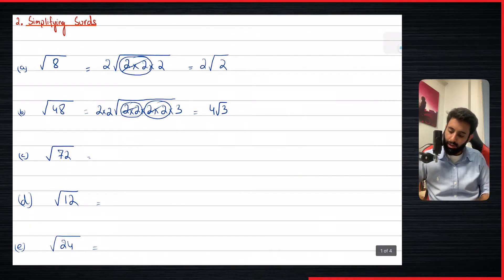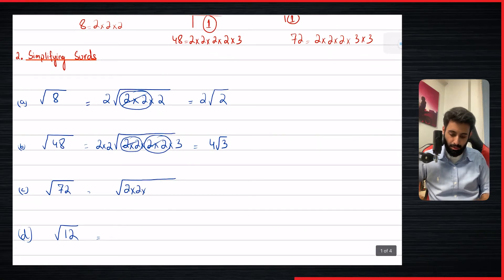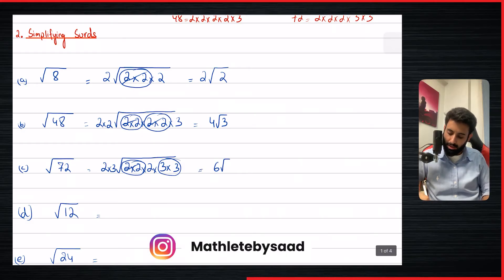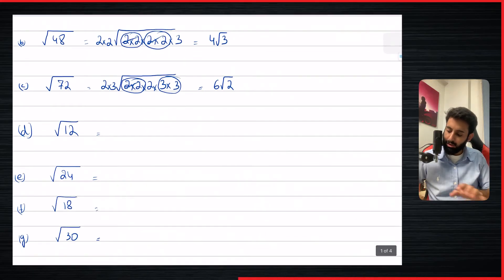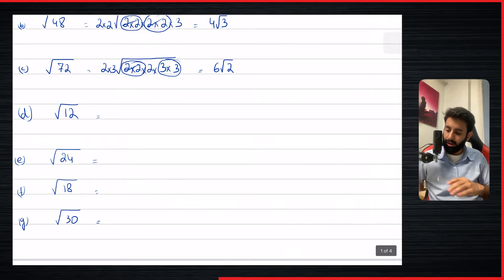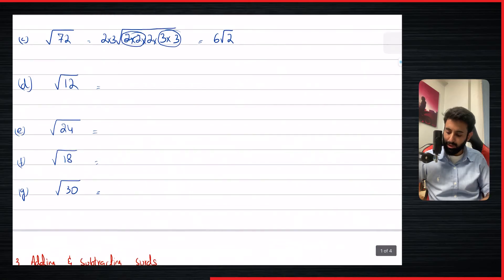Now let's try square root of 72. Square root of 72 can be written as two times two times two times three times three — and now you probably know why I didn't write it as two cubed times three squared, just so that we can see the pairs easily. We have a pair of two, so we'll bring that outside. We have a pair of three, so we'll bring that outside and multiply by the two already outside. So two times three is six, and that's what it becomes: six under root two.